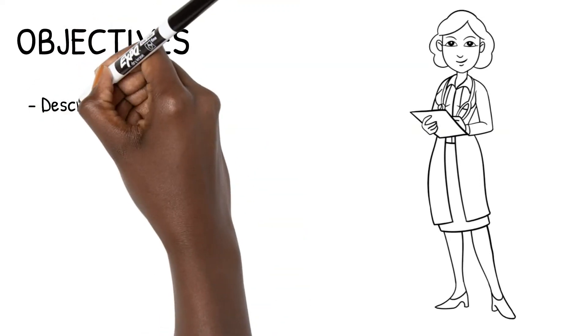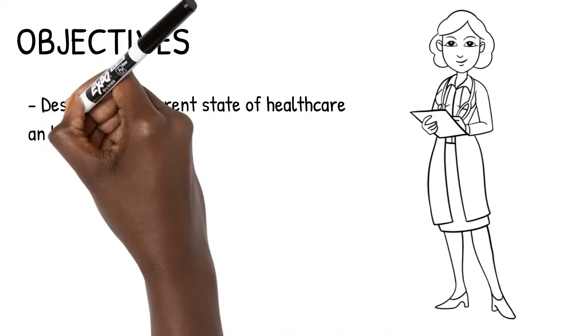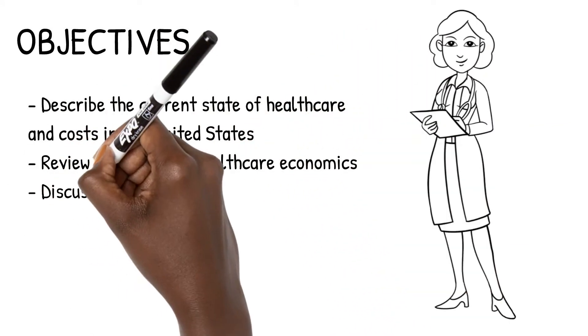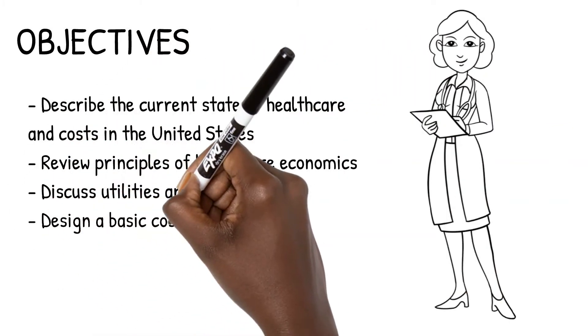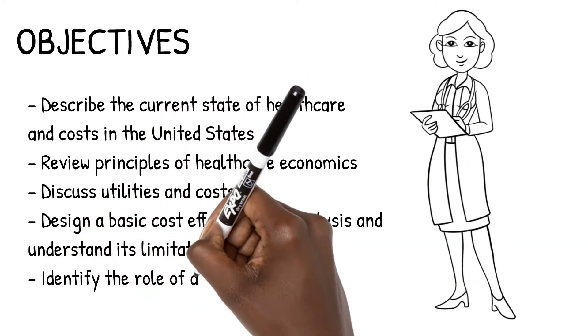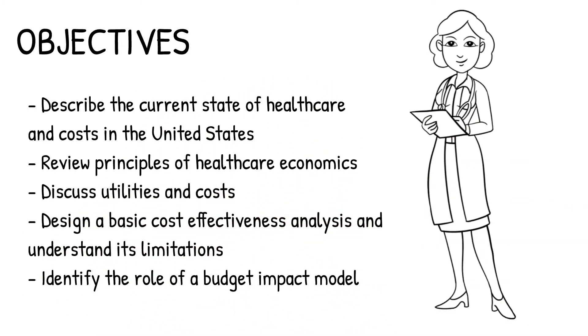The objectives for this module are as follows: describe the current state of health care and costs in the United States, review principles of health care economics, discuss using utilities and costs to compare interventions, design a basic cost-effectiveness analysis, and identify the role and calculate a budget impact model.